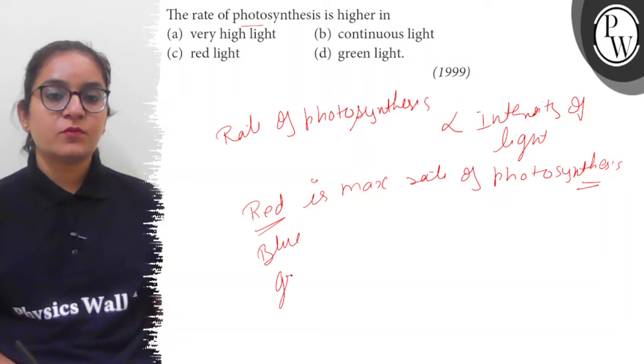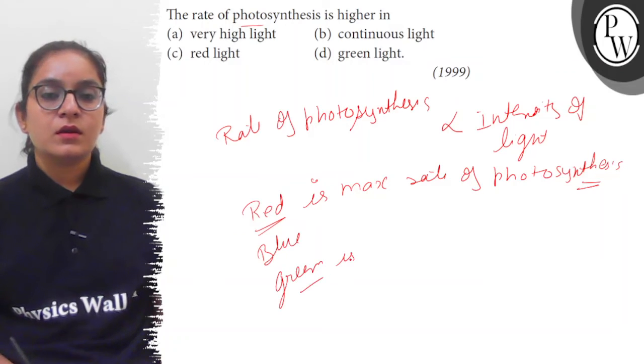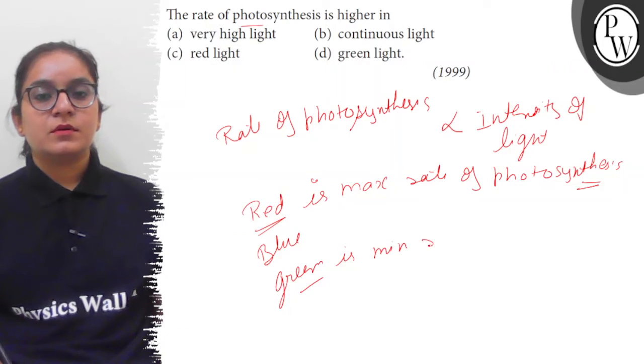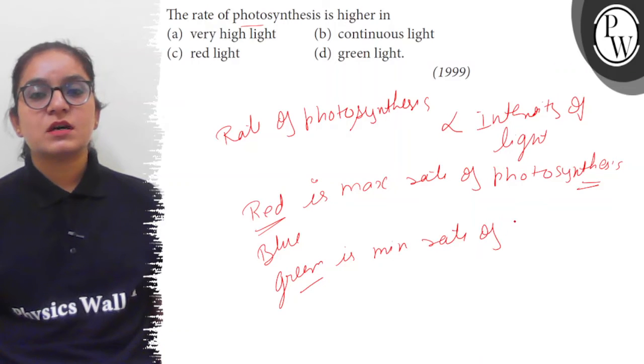The minimum rate of photosynthesis is found in green light, or minimum to no photosynthesis occurs in the presence of green light.